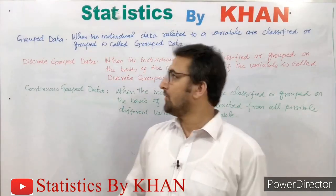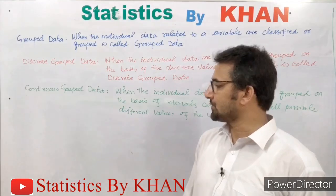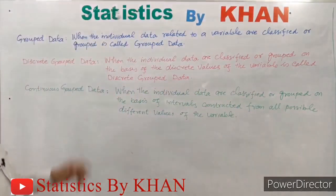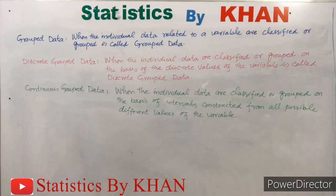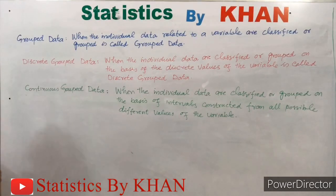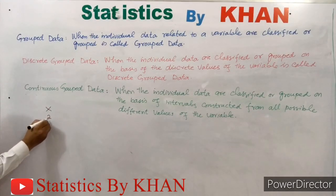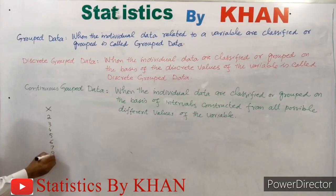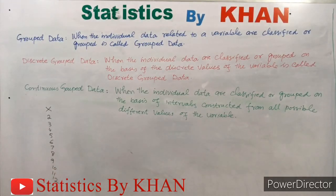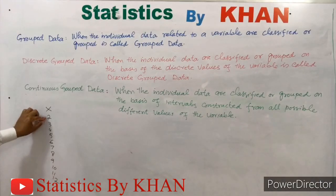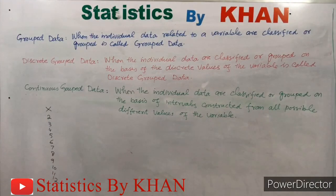Now I will give two examples — one related to discrete grouped data and one related to continuous grouped data — to help you understand these two types. Suppose we have data on family size, meaning the number of members in a family. If x denotes the variable family size, each may take a value from 2 to 12. The minimum members in a family might be two and the maximum family size will be 12, restricted just for the sake of understanding.